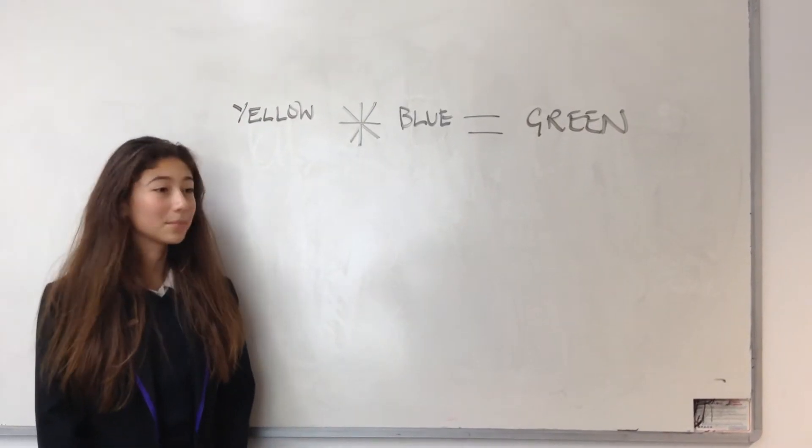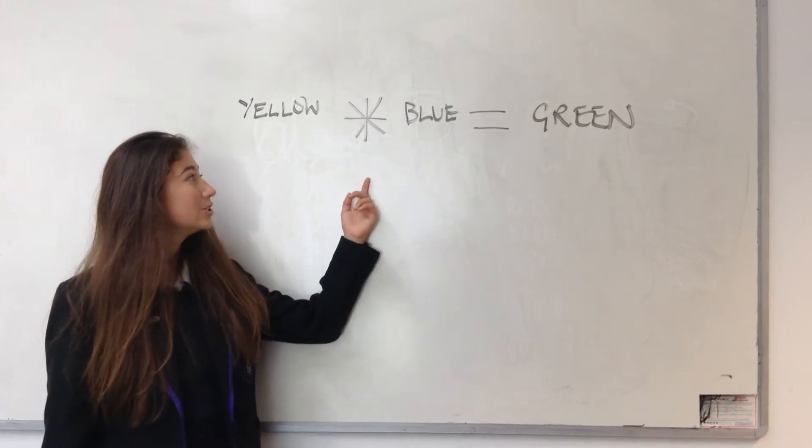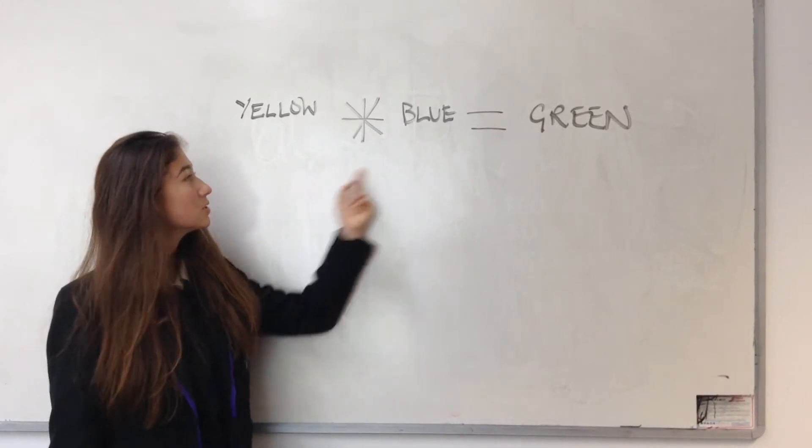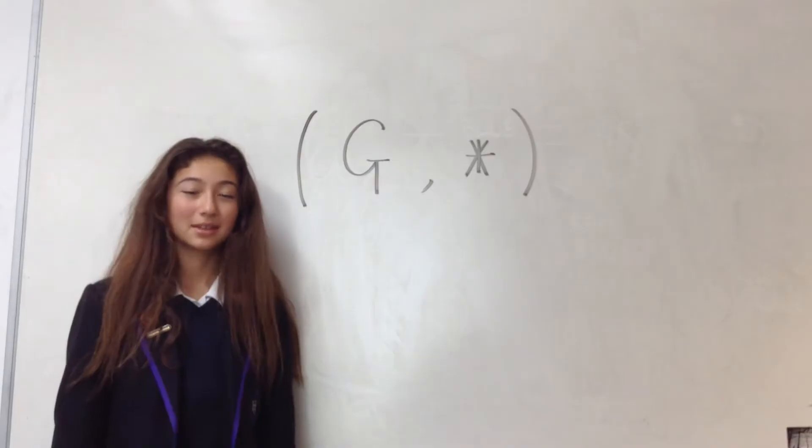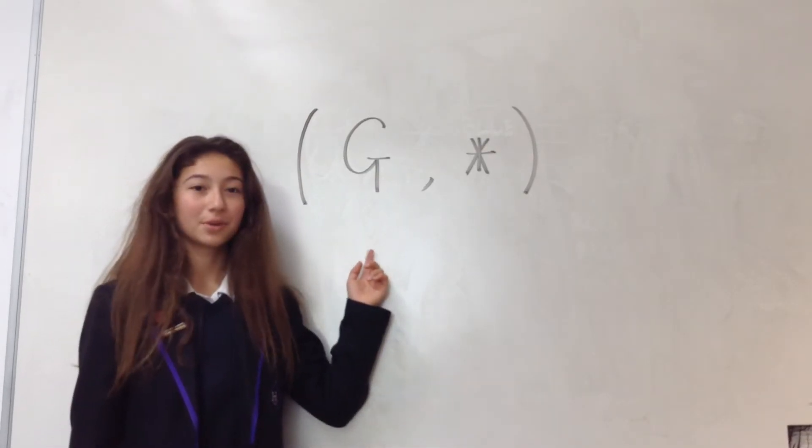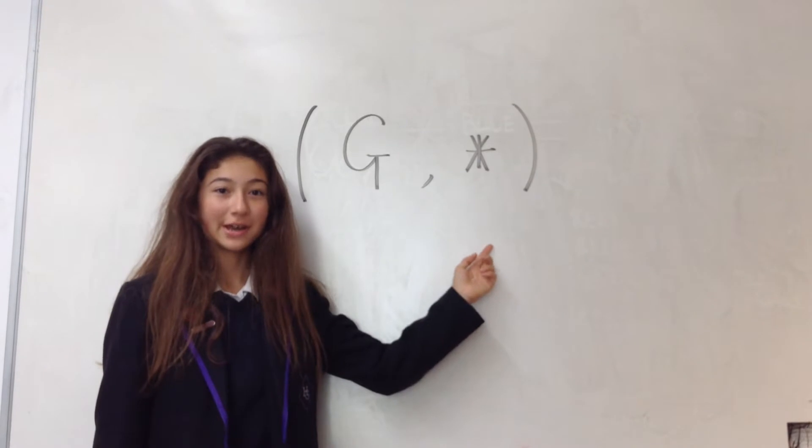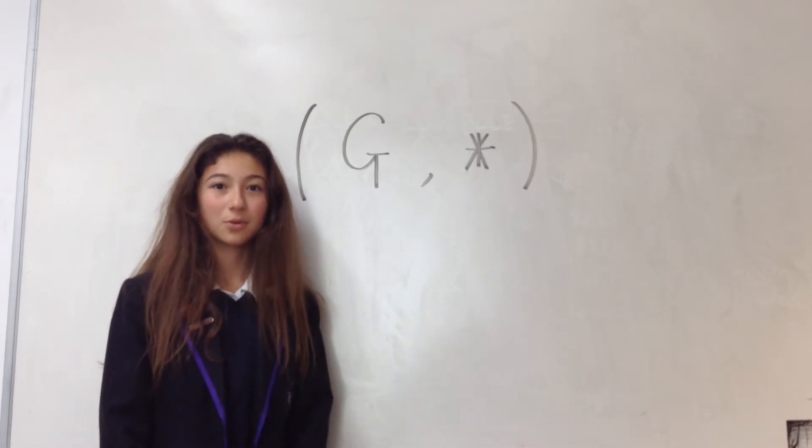In the colours example, the binary operation is to mix these two colours together to get another colour. A group is a set with a binary operation which satisfies three extra properties.